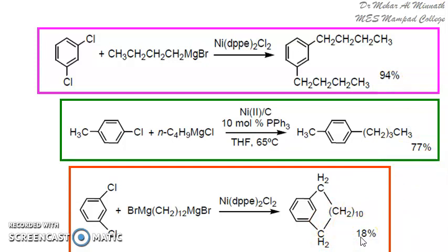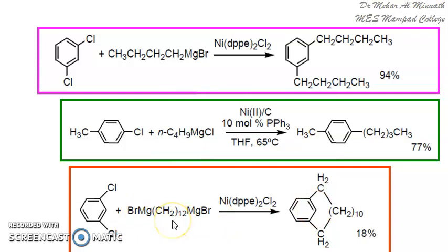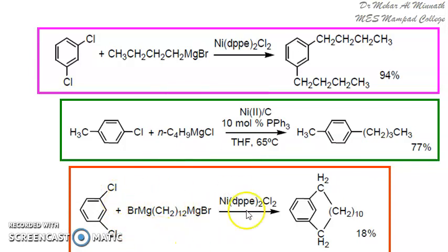Even though the yield is low at 18%, if you want to synthesize a large ring fused to the aryl ring, you can use this approach. Whatever the size of the ring needed, take that alkyl group with halogen attached — it must be a diaryl compound — using a Grignard reagent in all these cases.